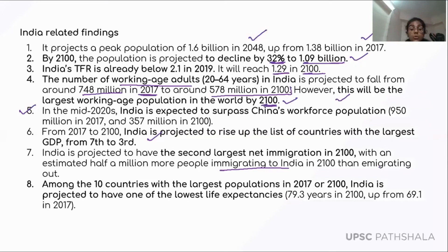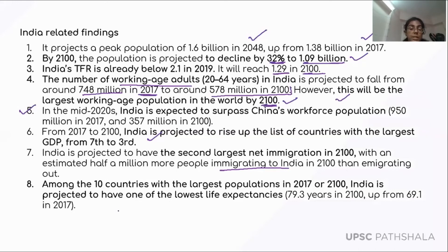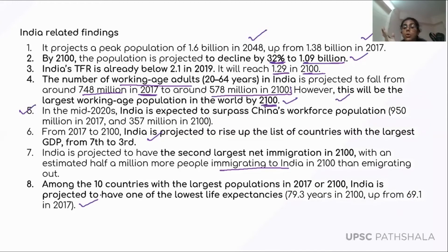Among the 10 countries with the largest population in 2017 or 2100, India is projected to have one of the lowest life expectancies. India's life expectancy will reach 79.3 years in 2100, up from 69.1 years in 2017, but it will still be among the lowest in that group.